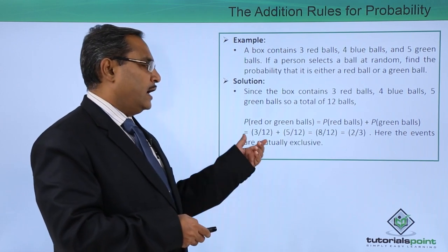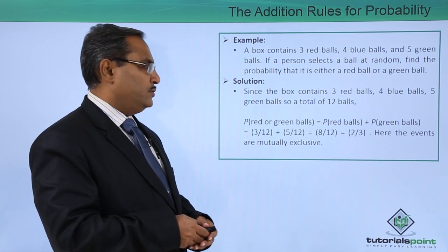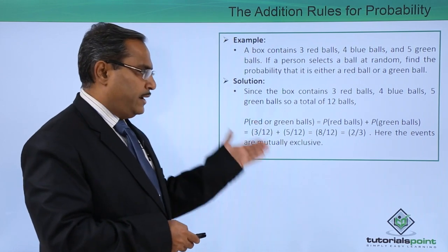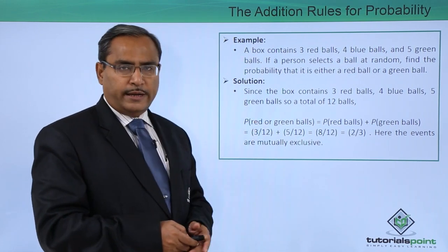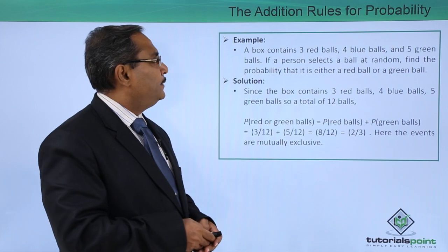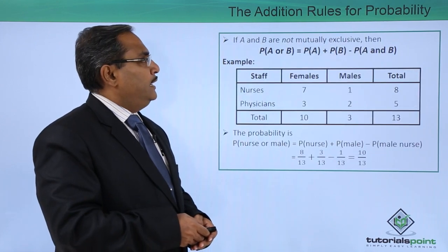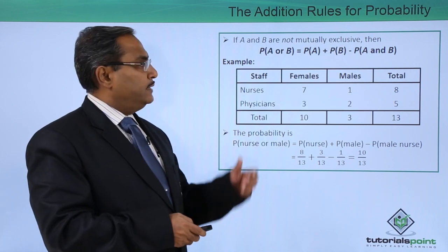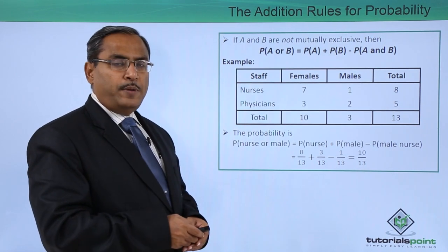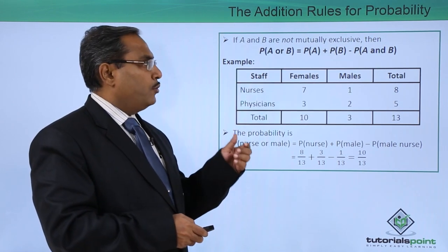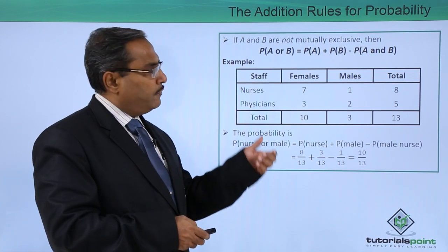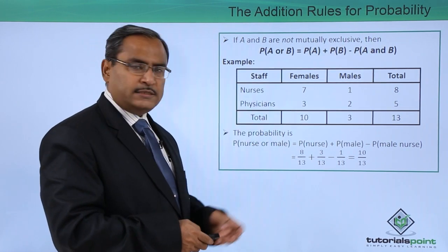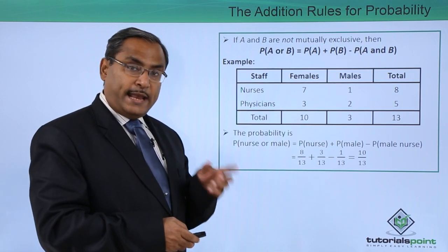The events here are mutually exclusive, because a ball cannot be of type red and green simultaneously. If A and B are not mutually exclusive, then the respective formula will be: probability of A or B is equal to probability of A plus probability of B minus probability of A and B.